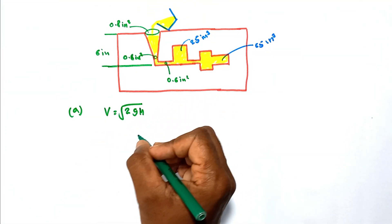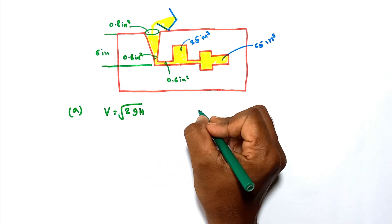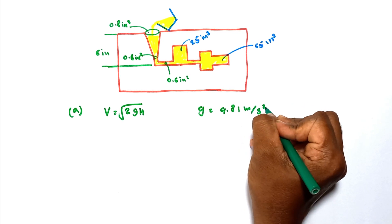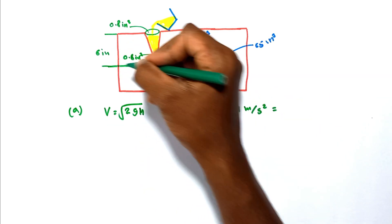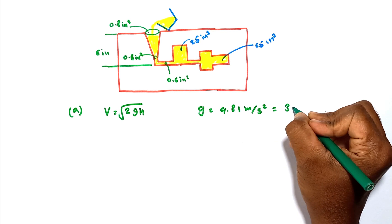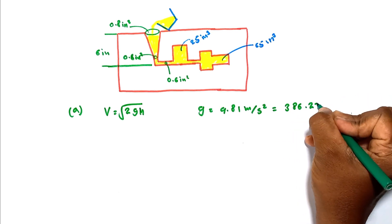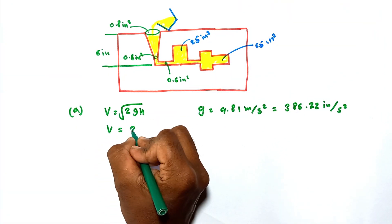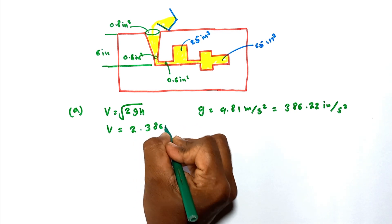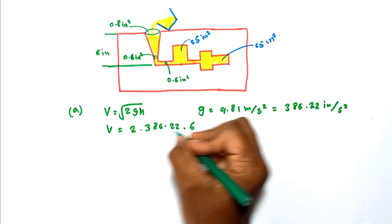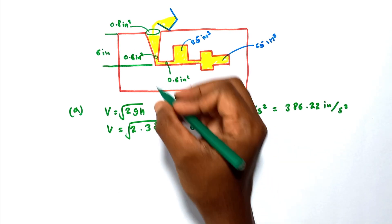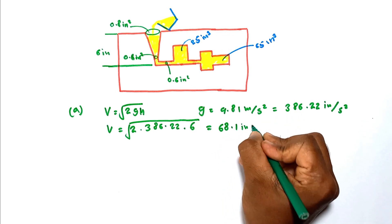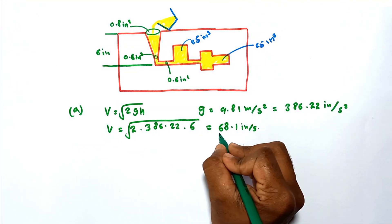All the dimensions are given: h is given as 6 inches, and g is known — g is equal to 9.81 meters per second squared. We have to convert into inches because the dimensions are given in inches, so that value equals 386.22 inches per second squared. Substituting: v = √(2 × 386.22 × 6), giving a velocity at the bottom of the sprue equal to 68.1 inches per second.